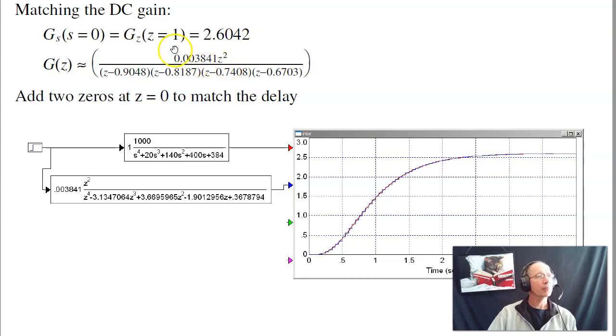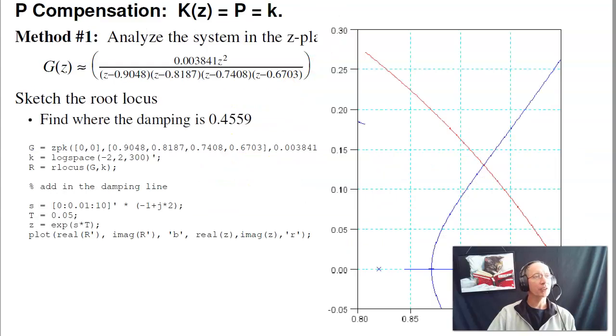If you plot the step response of g of s and g of z, this is in VisSim. You see the two have the same shape, same dc gain, same settling time. The delay is about right. So I've got the right number of zeros at z equals zero. Basically, this is the same system, s-plane and z-plane. Z-plane is what we'll be using because we're designing a discrete time compensator.